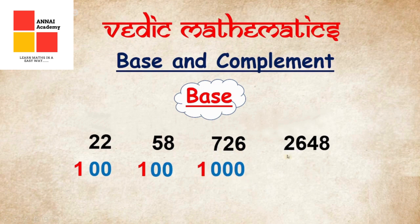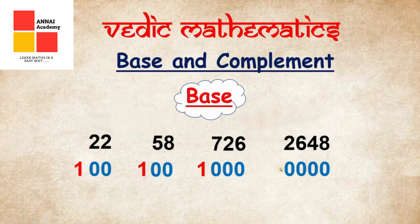Now let's talk about 2,648. While finding its base, we have to put 4 zeros and before that we have to put 1. That becomes 10,000. So the base of 2,648 is 10,000. I hope the concept of base is clear.